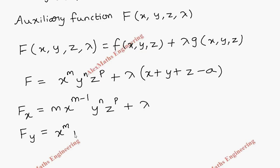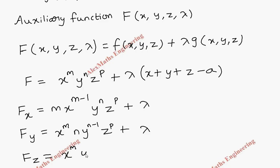The partial derivative with respect to y: the first term gives x^m · n·y^(n−1) · z^p + λ. The partial derivative with respect to z gives x^m · y^n · p·z^(p−1) + λ.